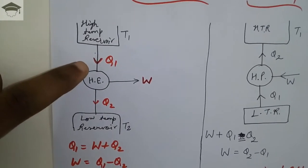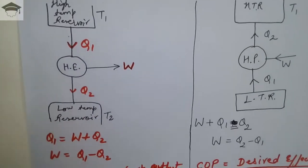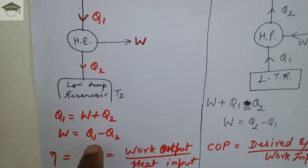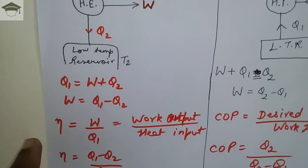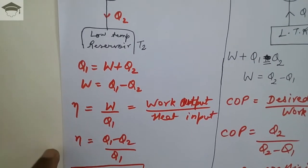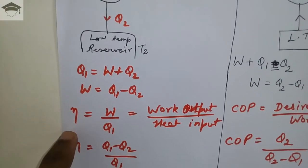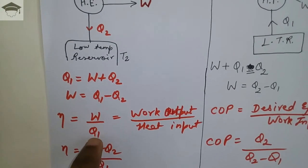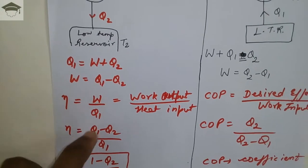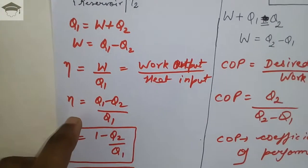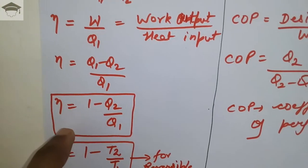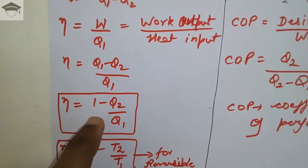By balancing the energy: Q1 is equal to Q2 plus W, so work done W is equal to Q1 minus Q2. For a heat engine there is a term known as efficiency, denoted by eta. Eta is equal to work done upon Q1, that is work output upon heat input. Substituting the value of W, efficiency is equal to Q1 minus Q2 upon Q1, which simplifies to eta equals 1 minus Q2 upon Q1.